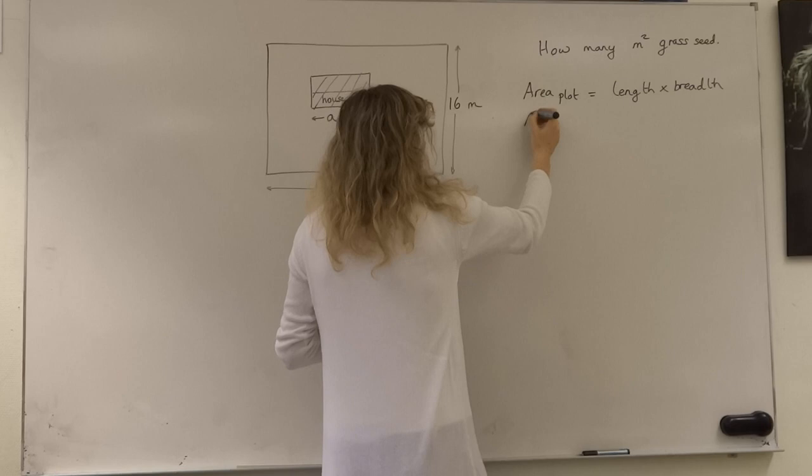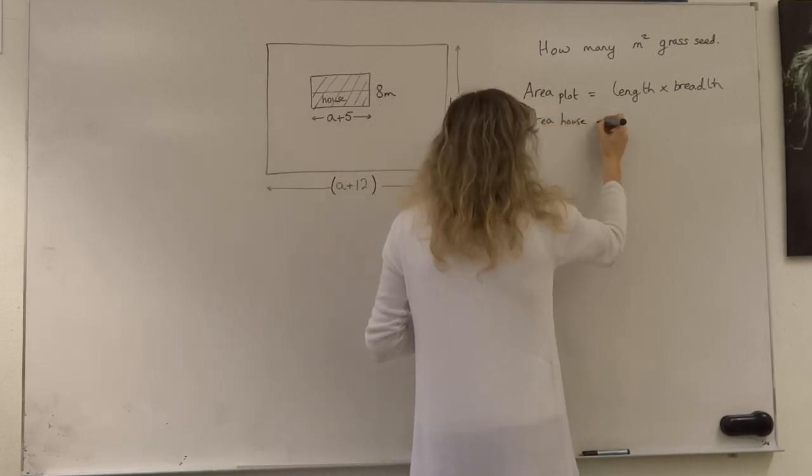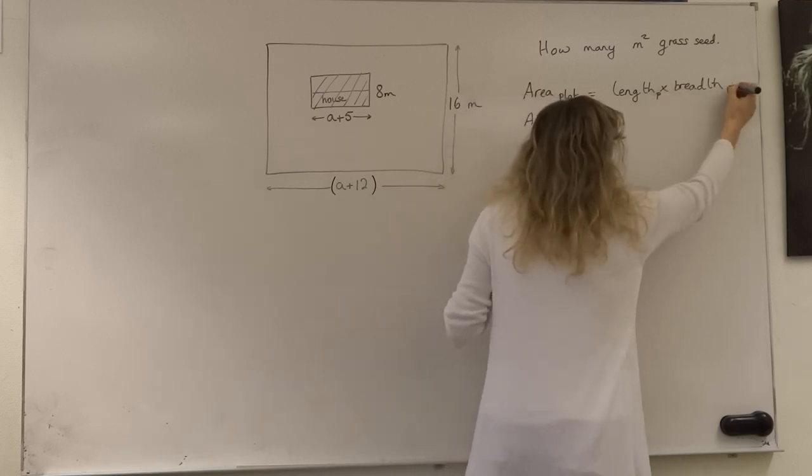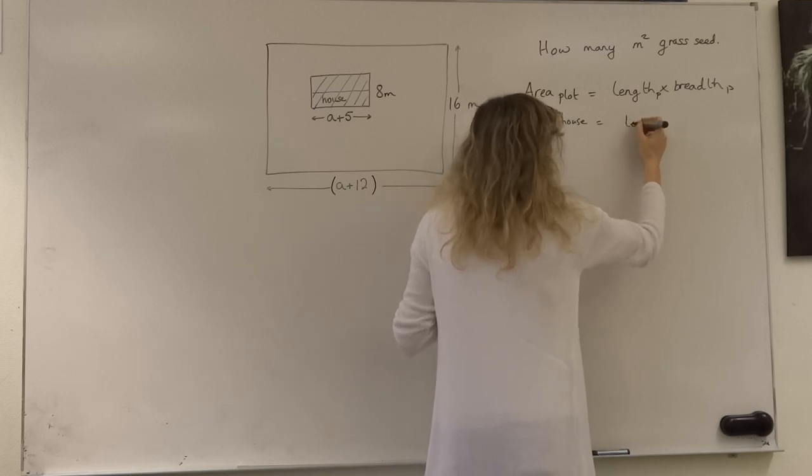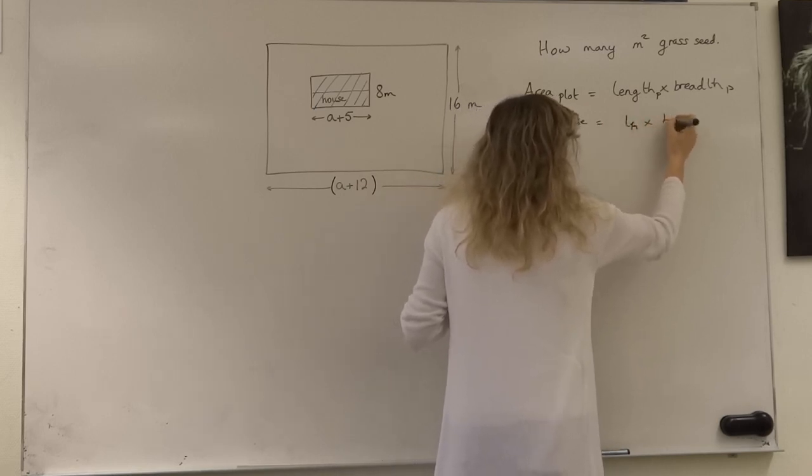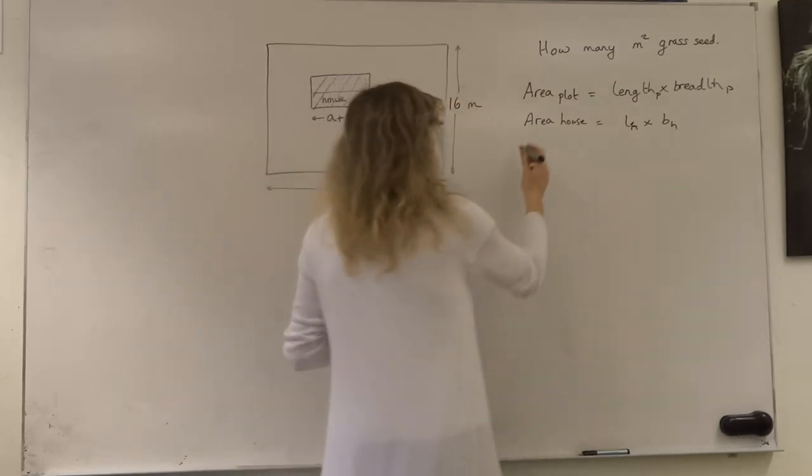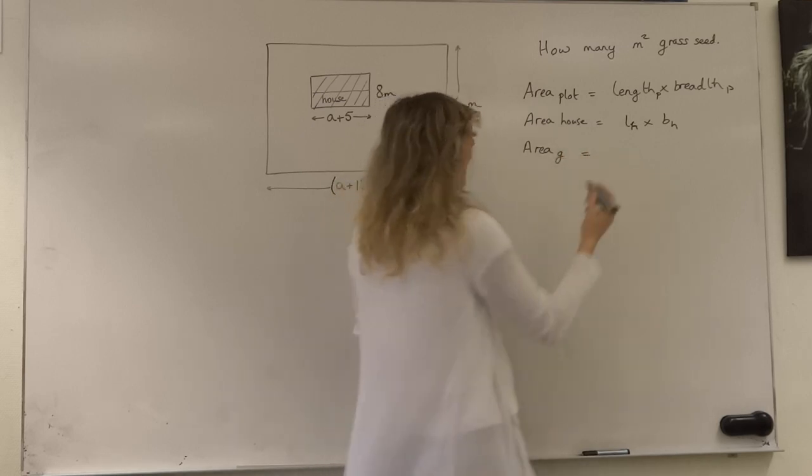The area of the house is the length of the house, so this is the whole plot we call it P, and the area of the house will be the length of the house times the breadth of the house. And the area of grass seed that we're going to need, which we'll call area of G, will be...